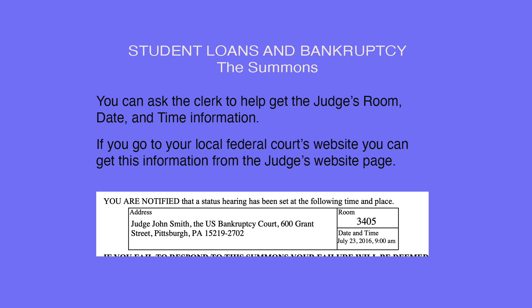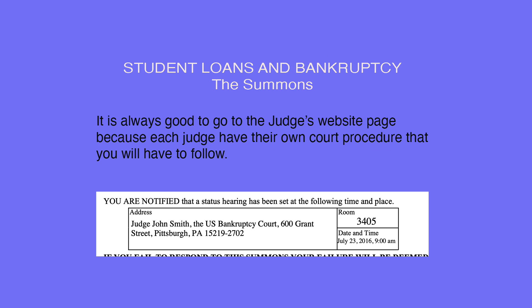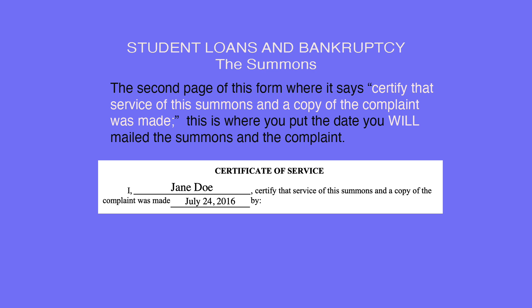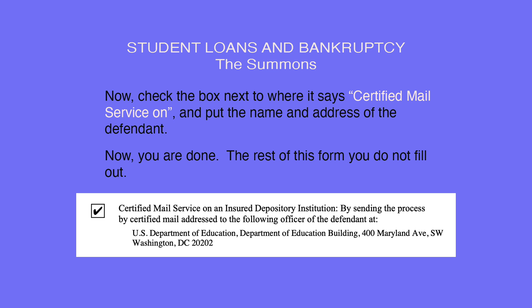You can ask the clerk to help get the judge's room, date, and time information. However, if you go to your local federal court's website, you can get this information from the judge's webpage. It is always good to go to the judge's webpage because each judge has their own court procedure you will have to follow. Remember, for the status hearing, you must give them at least 60 days from the date you mail the summons. The second page of this form is where it says 'Certify that service of the summons and a copy of the complaint was made.' Put the date you will mail the summons and the complaint, then check the box next to 'Certify mail service on' and put the name and address of the defendant. The rest of this form you do not fill out.